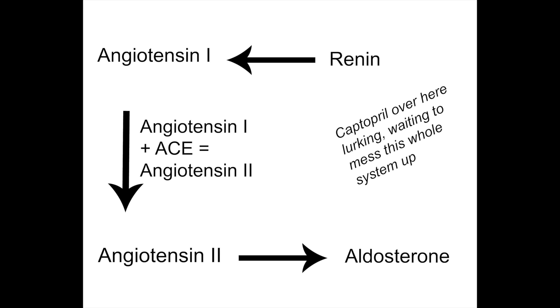Angiotensin 1 needs to become angiotensin 2, but to do that it needs the angiotensin converting enzyme. When angiotensin 2 is formed, it increases blood pressure by constricting the arterioles and also causes the release of aldosterone. Aldosterone increases the absorption of sodium, and if the body retains sodium it also retains water — because water follows sodium.